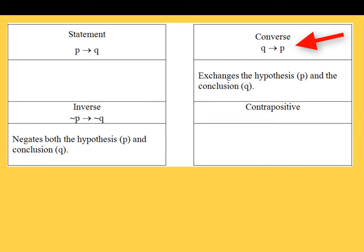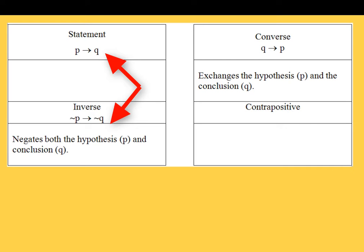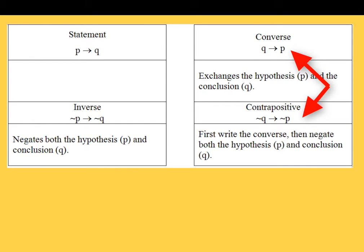From the symbolic perspective: converse is q implies p. Now the contrapositive — the way to figure it out symbolically is very similar to how the statement changes into the inverse, except we use the converse. In the converse we have q implies p; in the contrapositive we negate each one: not q implies not p. So we write the converse and then negate both the hypothesis and the conclusion.